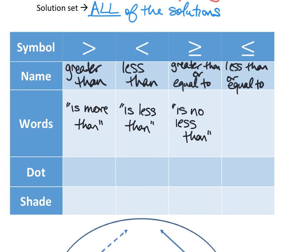By the same token, less than or equal to is indicated by the phrase 'is no more than.' If I say my bank account has no more than $20 in it, that means I have $20 or less in my bank account — less than or equal to.